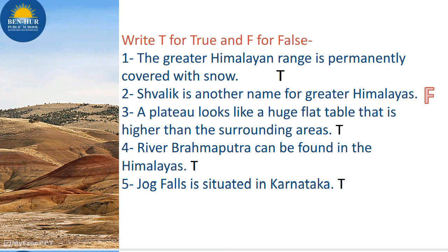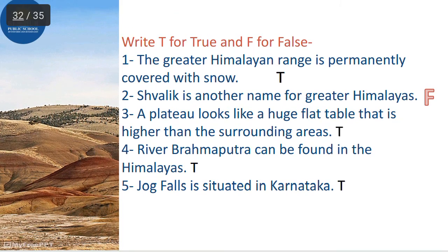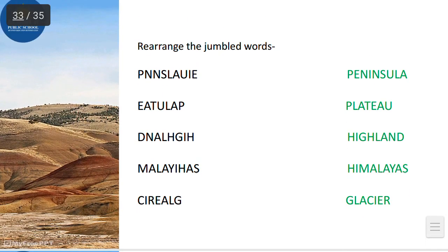Right true or false. The greater Himalayan range is permanently covered with snow — True. Shivalik is another name for greater Himalayas — False. A plateau looks like a huge flat table that is higher than the surrounding area — True. River Brahmaputra can be found in the Himalayas — True. Jog Falls is situated in Karnataka — True.